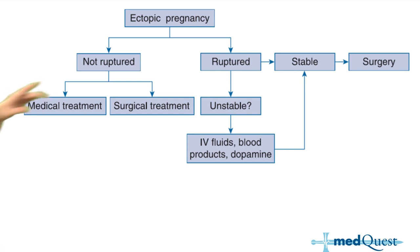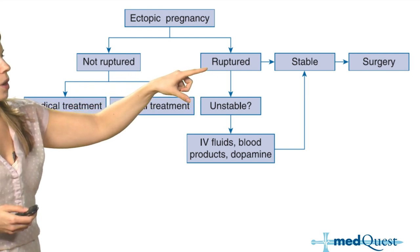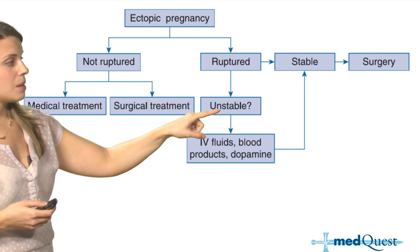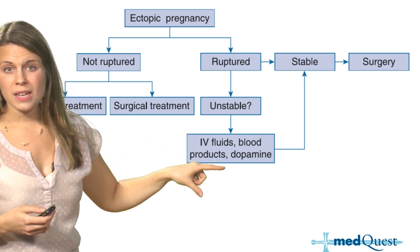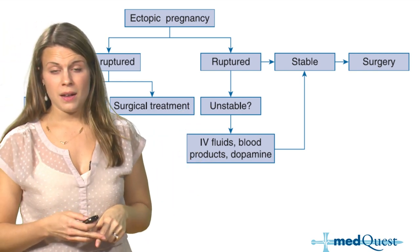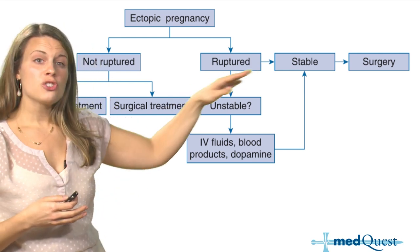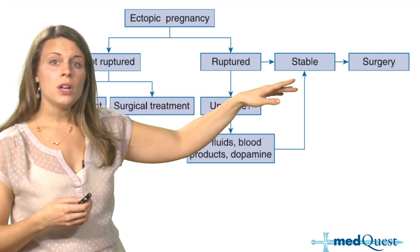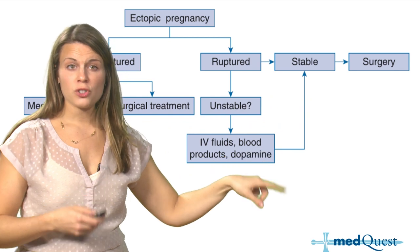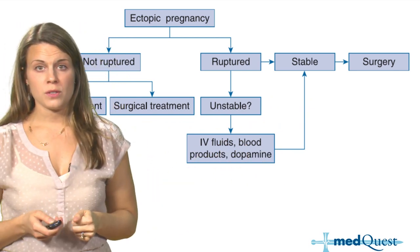In patients with a ruptured ectopic pregnancy, determine whether they are stable or unstable. Anyone unstable should be stabilized first with fluids, blood products as needed, and potentially vasopressors. In stable patients, you can go straight to surgery. Even the unstable patients, once stabilized, will be brought to surgery as well.